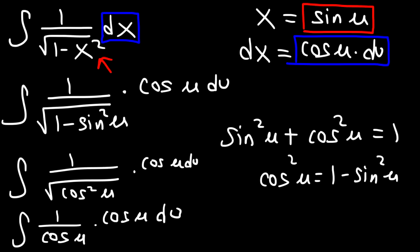And cosine divided by cosine is 1. So we have the integral of 1 du which is u plus some constant c.